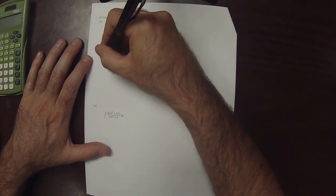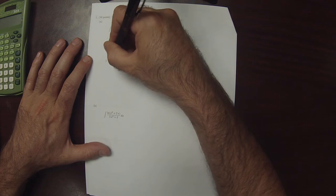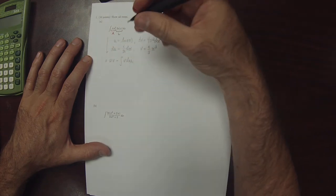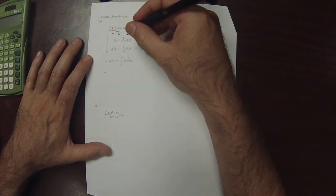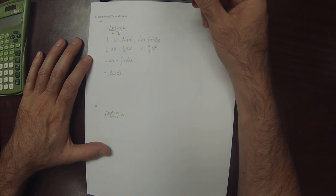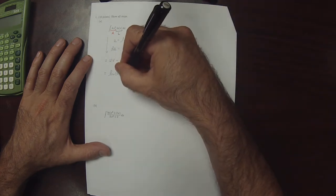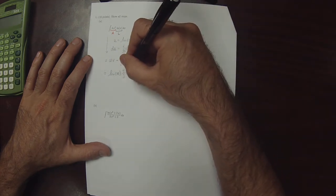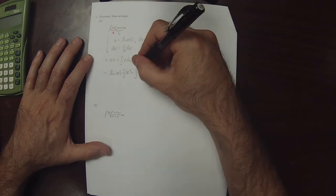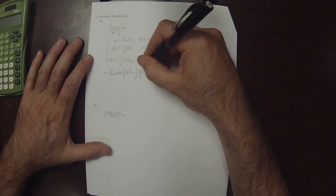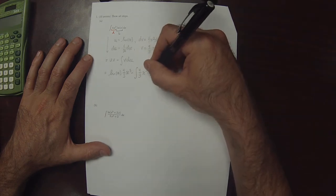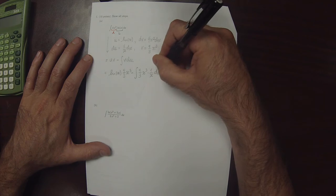So the right-hand side of by-parts is uv minus the antiderivative of vdu. So that would be log x times 4 thirds x cubed minus the antiderivative of 4 thirds x cubed times 1 over x dx.